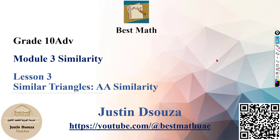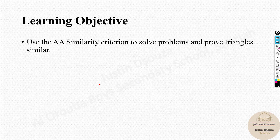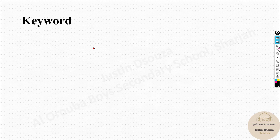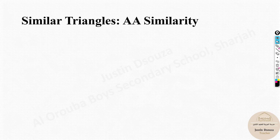Hello and welcome to the third lesson in module 3: similarity triangles - AA similarity. AA similarity stands for angle-angle similarity. The lesson objective is to use the AA similarity criterion to solve problems and prove triangles similar. It's one of the shortest lessons, with only two example problems. The keyword is 'similar triangles.'